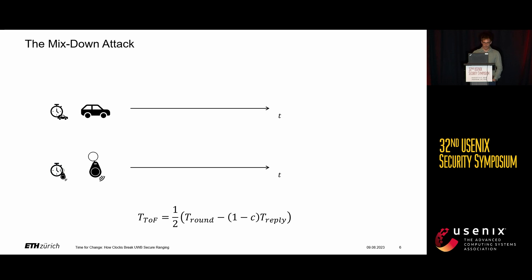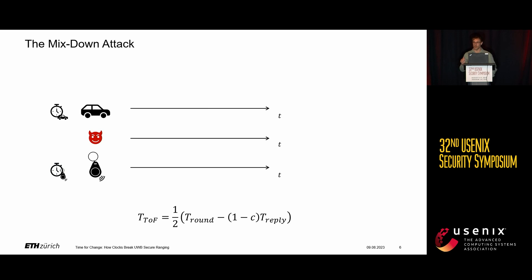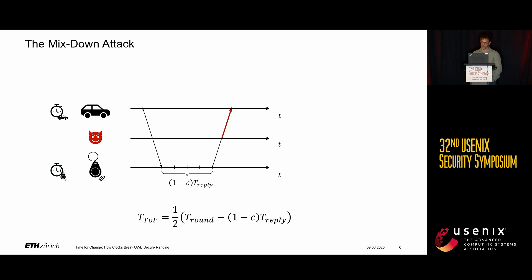This is what we exploit in the mixed down attack. A malicious party tries to exploit the compensation that is based on the carrier frequency offset measured over the air. The attacker stays passive while the initiator sends, but when the response comes, the attacker becomes active — pointing an antenna towards the responder, picking up the signal, and changing the carrier frequency of these waveforms by a tiny bit.